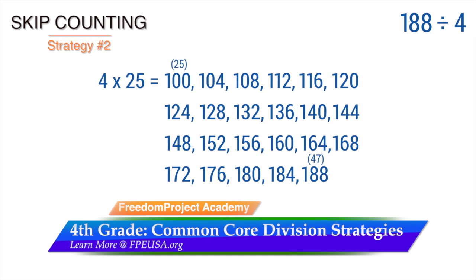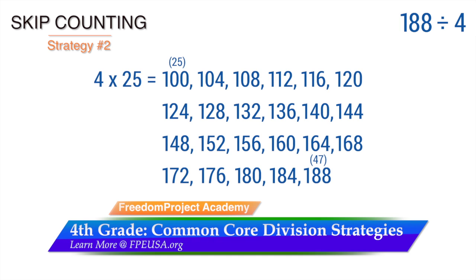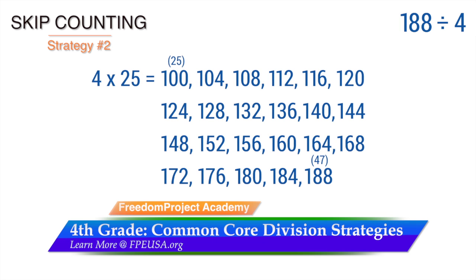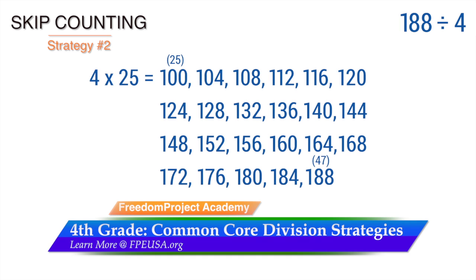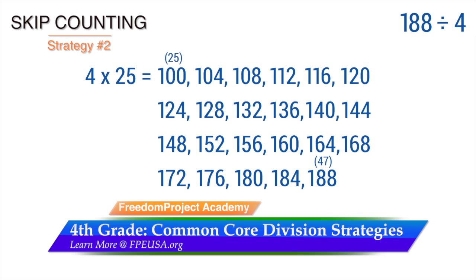The second strategy is skip counting. We need to find how many multiples of 4 are in 188. A likely starting place might be 4 times 25, since it is easy to think that 4 quarters equal a dollar. Look at the illustration as we count the multiples. We start at 25 with 100 and continue until we count 188 as the 47th multiple. 47 is the answer to 188 divided by 4.